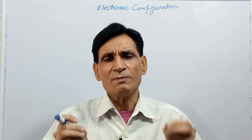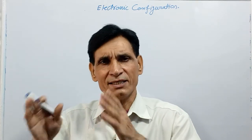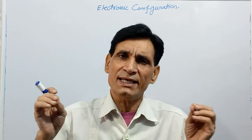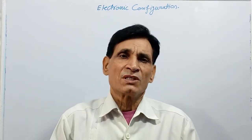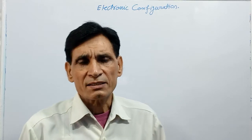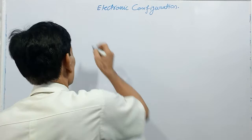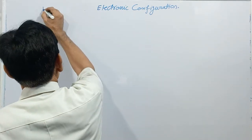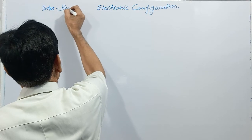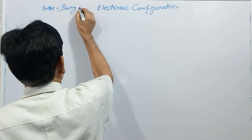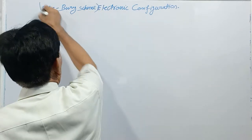Once again: the distribution of electrons in various orbits, shells, or energy levels of an element is called electronic configuration. The second point is electronic configuration according to the Bohr-Bury rule, also known as the Bohr-Bury scheme.